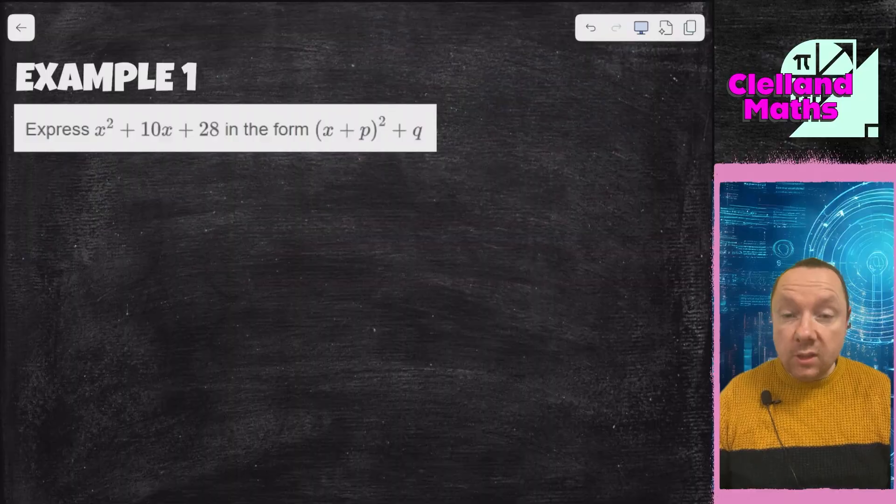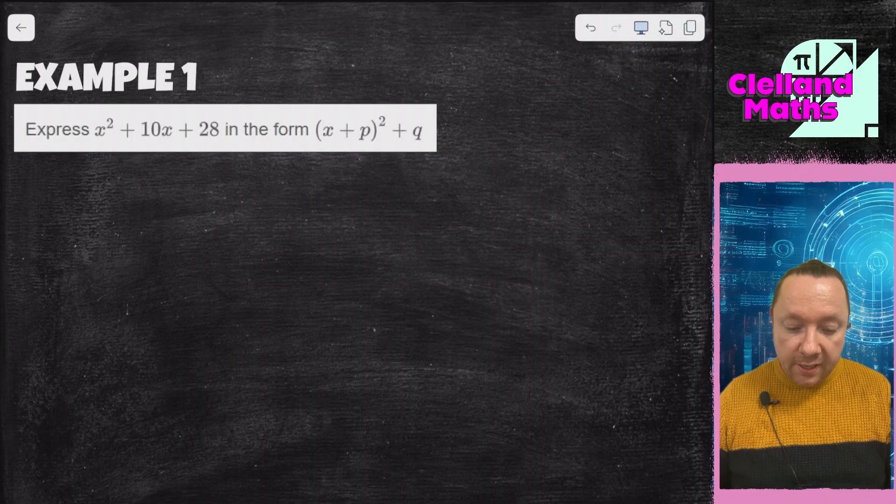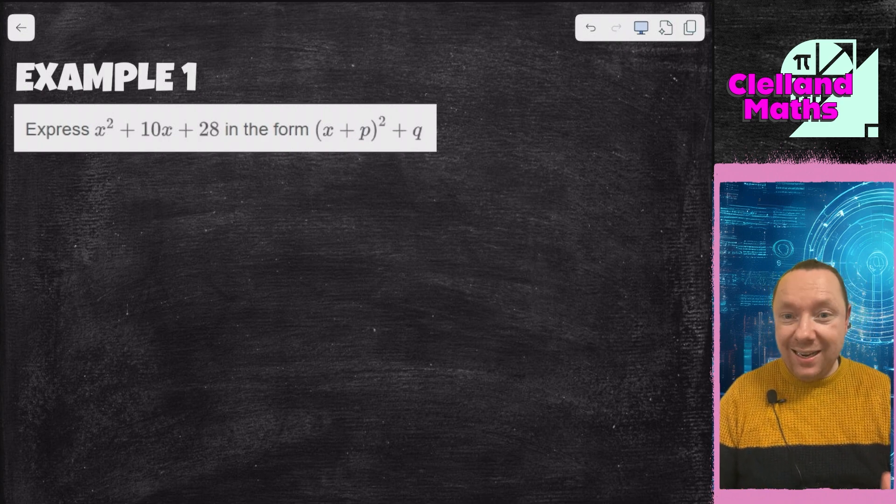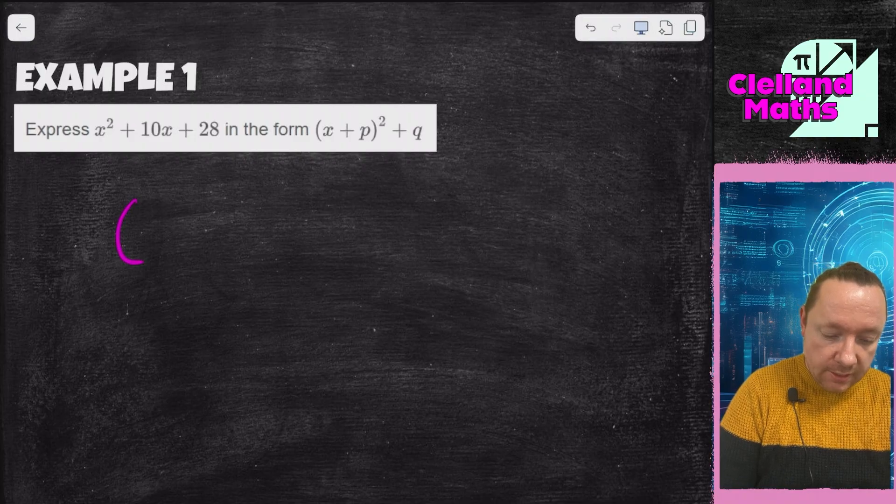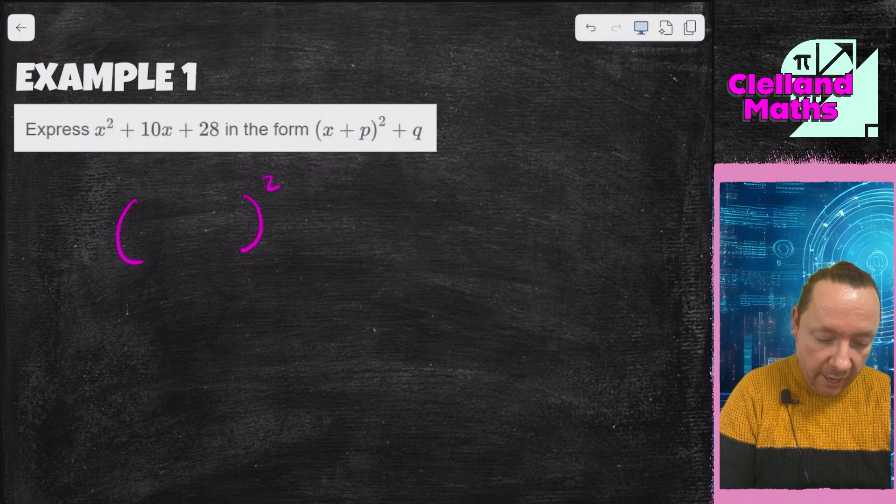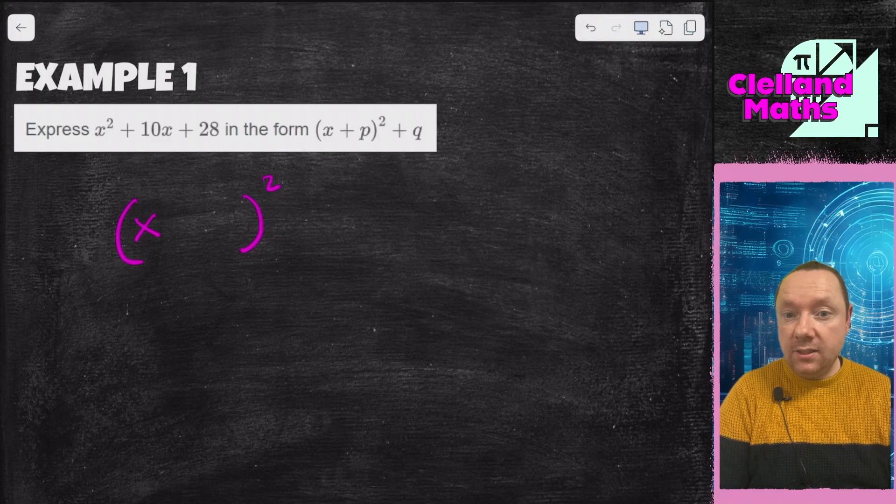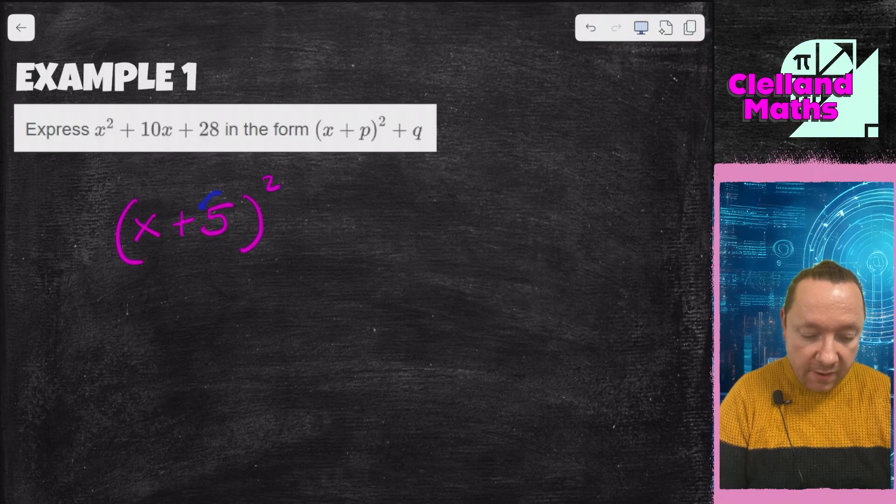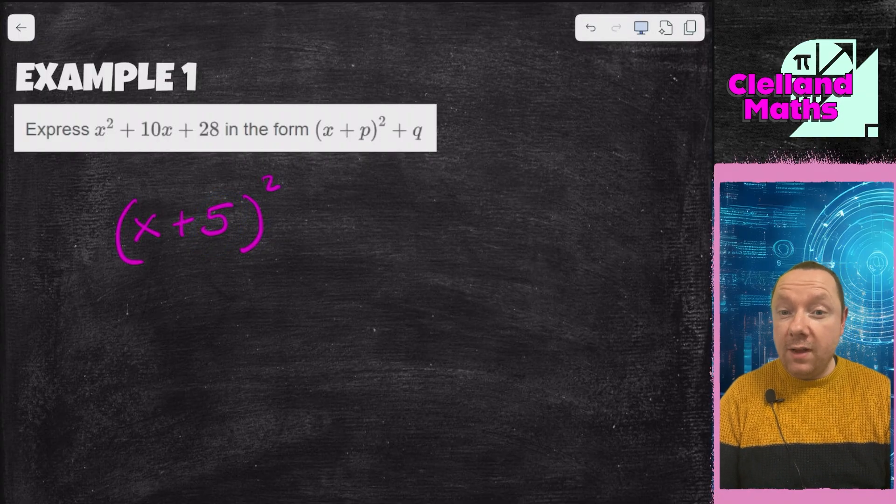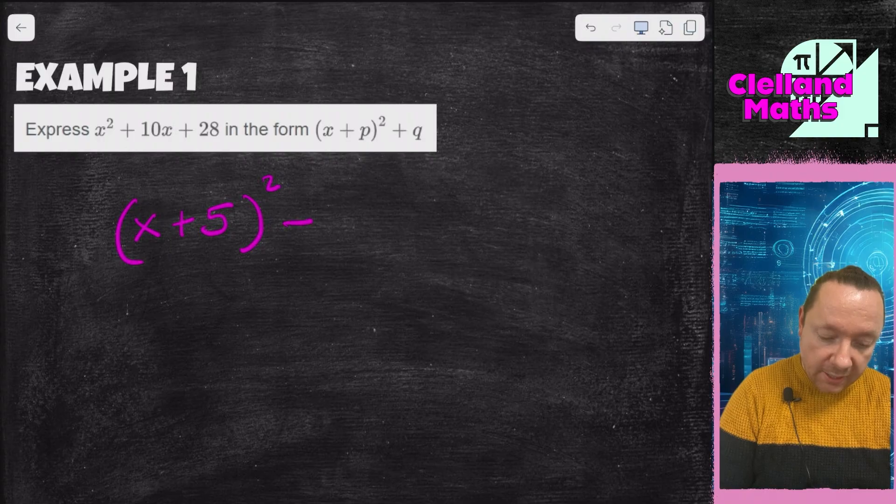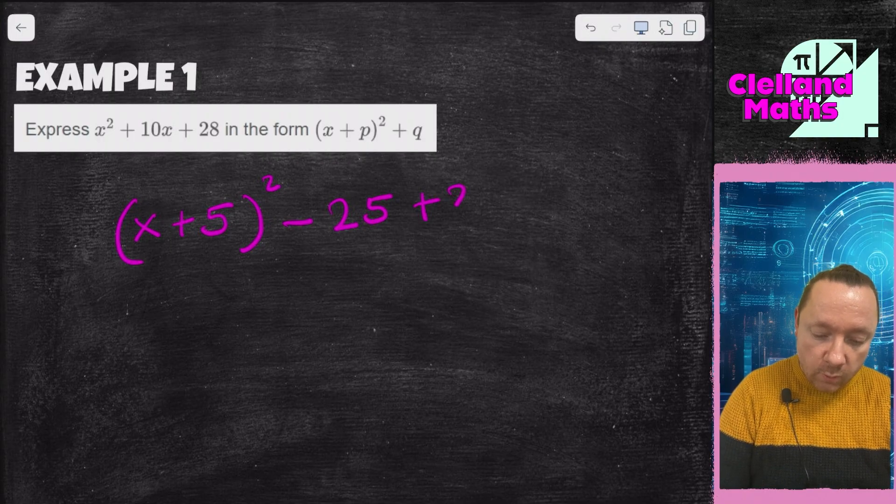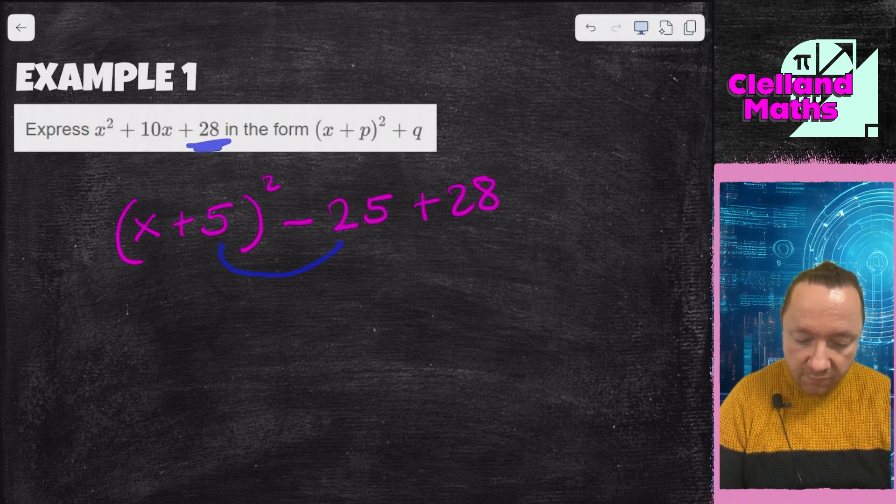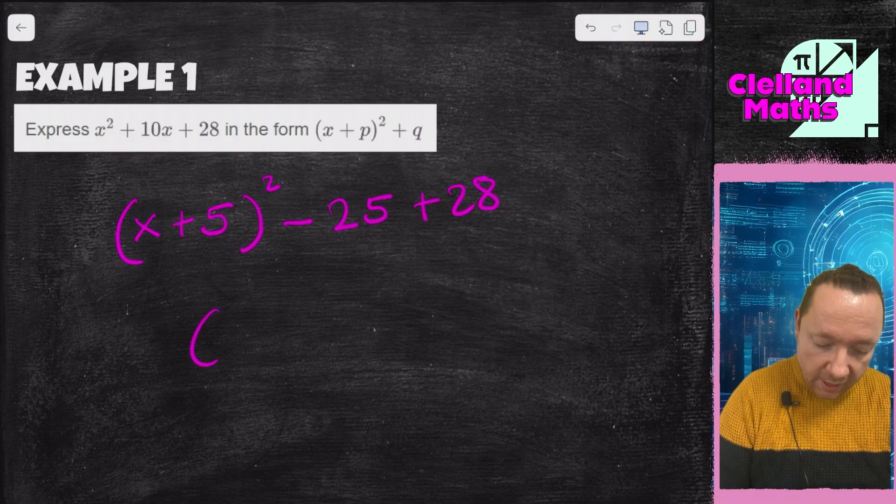Example 1, express x squared plus 10x plus 28 in the form x plus p squared plus q, which is completing the square form. It's quite a nice method. All you do is draw a single bracket and write squared. You've got x squared, x, and it says plus 10x, so you half the 10 to make 5. Now you've got an immediate thing to do. You need to take away 5 squared because if you think about it, 5 times 5 is 25. So I'm going to be over by 25 if I've still got 28 on the end. That's how I work out what my last number is. I write that plus 28 first, so I take away the 25 because I'm over by that.